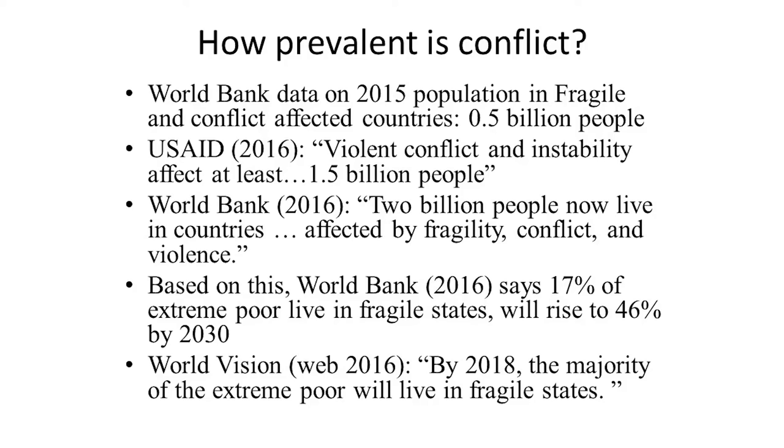Not even that was good enough for the NGO World Vision, who claimed that by 2018, the majority of the extreme poor will live in fragile states affected by conflict. Even the first number was somewhat exaggerated because it counted everyone who lived in any state where there was any conflict going on — and even that number was not good enough for the cause of advocacy against conflict.